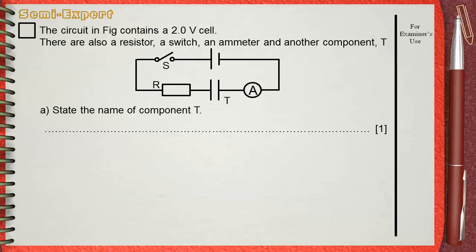Another question that proves you need to be familiar with the symbols of different circuit components. This component T which shows equal parallel straight lines is named the capacitor.